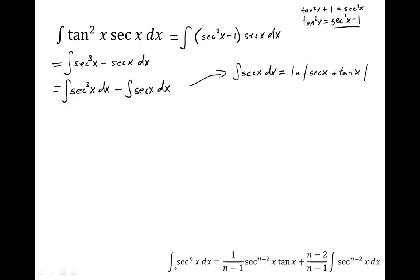We have a power reduction formula that says the integral of secant to the nth power of x dx is equal to 1 over n minus 1 times secant to the n minus 2 power of x times tangent x, plus the fraction n minus 2 over n minus 1 times the integral of secant to the n minus 2 power of x dx. In this example we have secant cubed of x, which means n equals 3.